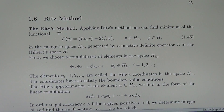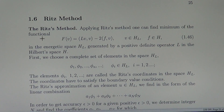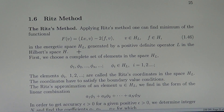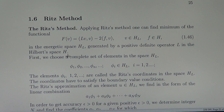The Ritz method. Applying the Ritz method, one can find the minimum of a functional in the energetic space capital H_L, generated by a positive definite operator in the Hilbert space H.